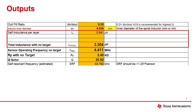The inductance of the coil is shown as self inductance per layer and as total inductance with no target. The per-layer calculation is an intermediate step that goes into the overall sensor inductance, while the inductance with no target is used to determine the sensor coil frequency. For my design I have 3.304 microhenries without a target.